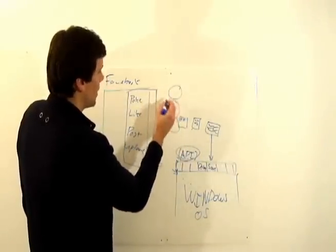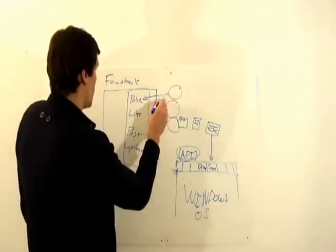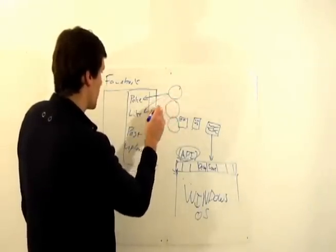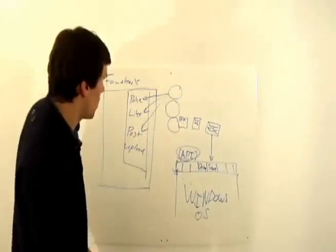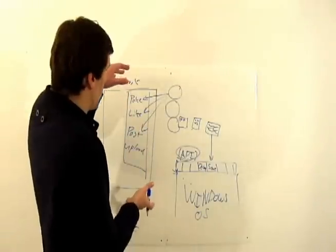And they say, alright, other people, you can now use our system and poke a person, or use your system to like a person, or post on somebody's wall. So basically what they're doing is they're opening up their little programs.